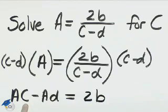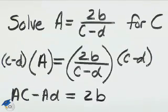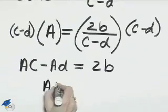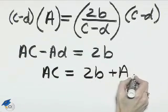We're still solving for C, so we need to take negative AD to the right-hand side by adding AD. AC equals 2B plus AD.